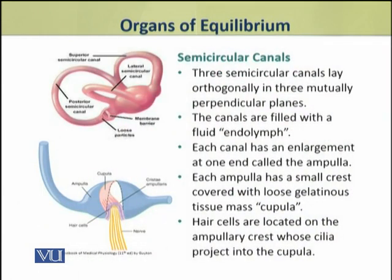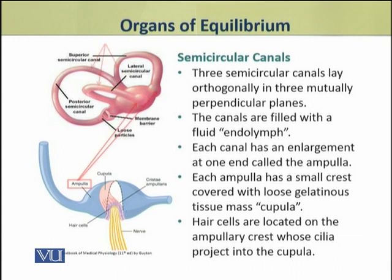Now we shall discuss the role of semicircular canals. There are three semicircular canals which are arranged orthogonally, that is perpendicular to each other — all three are at right angles to one another. These canals are filled with a fluid which is called endolymph. Every canal has an enlargement at one end, which is called the ampulla.